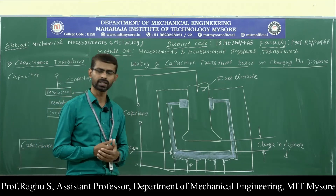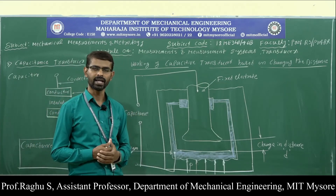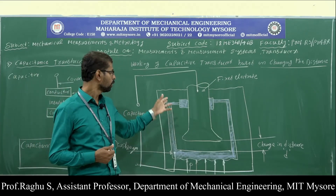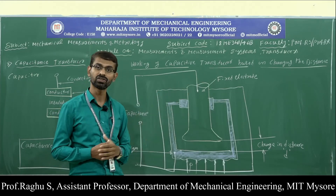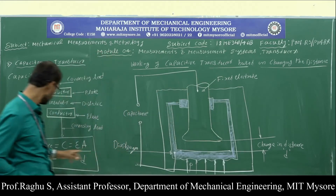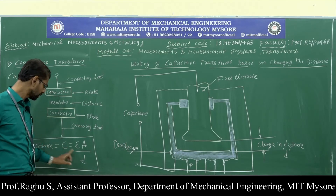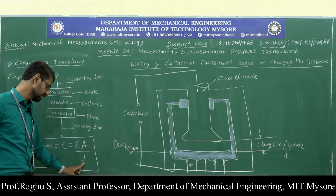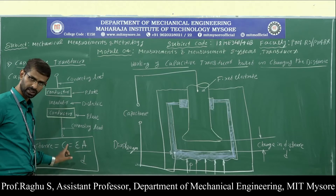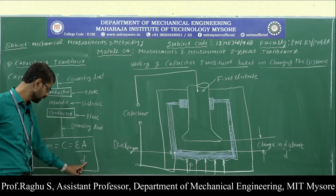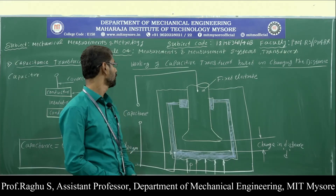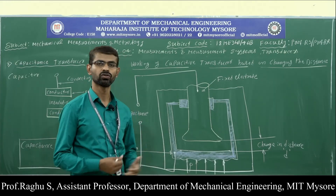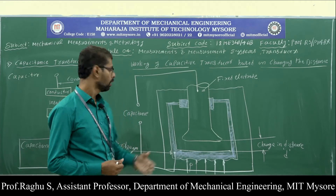When the area or distance changes, the capacitance also changes, and this may occur due to application of pressure or force. The working of this capacitive transducer is based on changing the distance. When the distance decreases, capacitance increases, and vice versa.